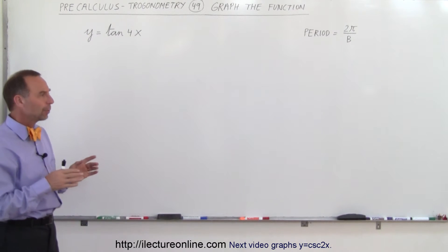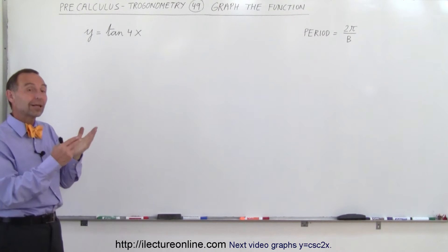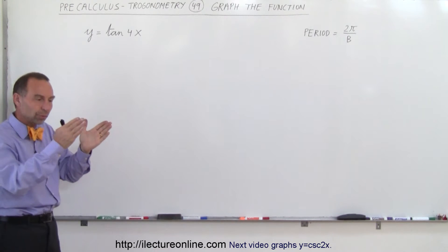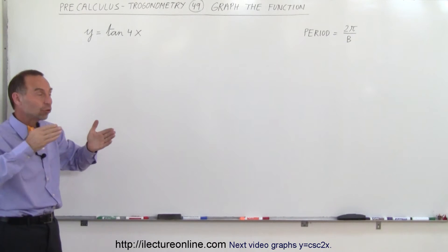In order to do that, we have to realize that this is what we call the period factor, and the bigger that number, the more the function will be squished together. So this will be reduced in width by one fourth, its normal width.